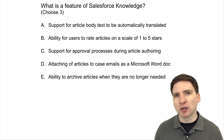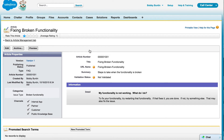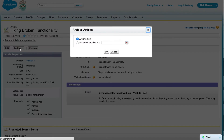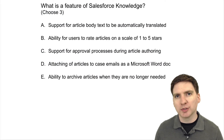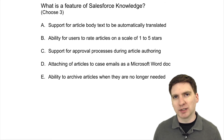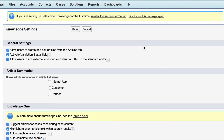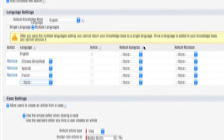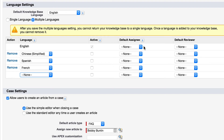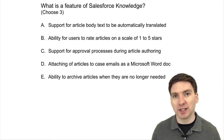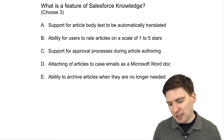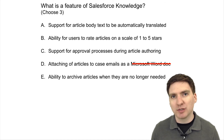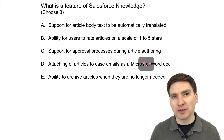Answer E: archiving of articles when they are no longer needed is a feature of Salesforce Knowledge. A knowledge manager can manually archive articles, or you can set up an archive date in the future for automatic archiving. Archived articles can still be searched by knowledge managers and used to create new articles. The two incorrect answers were A and D. Automatic translation is not supported, though you can have translated versions in different languages — humans must do the translating. Attaching articles as Microsoft Word docs is not supported; however, you can attach articles to case emails as PDF documents.